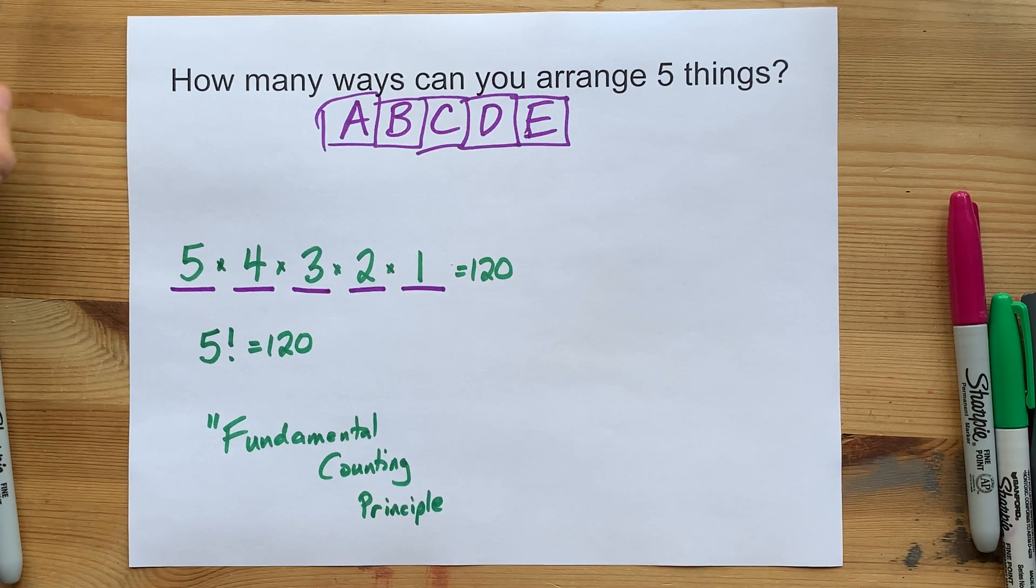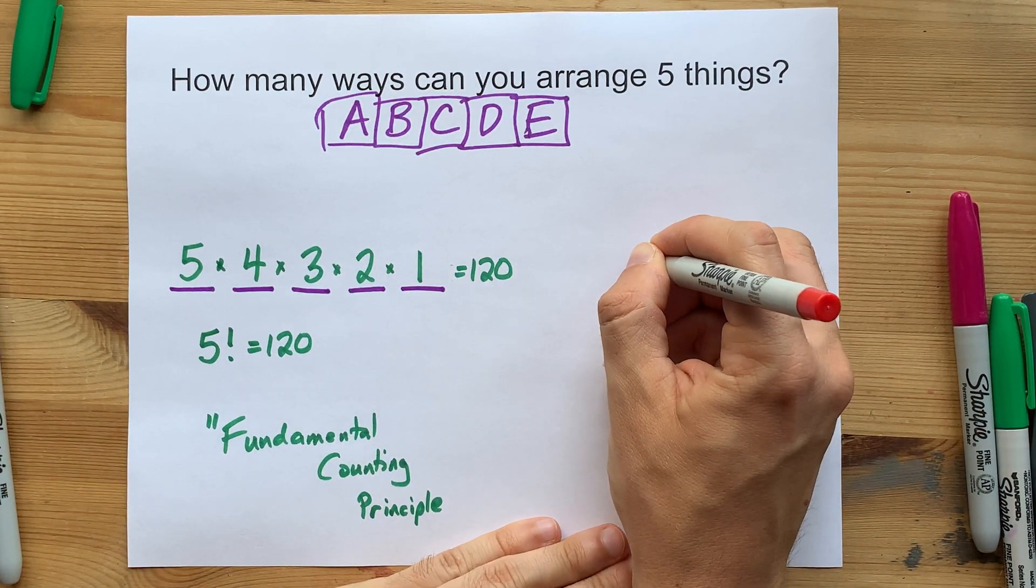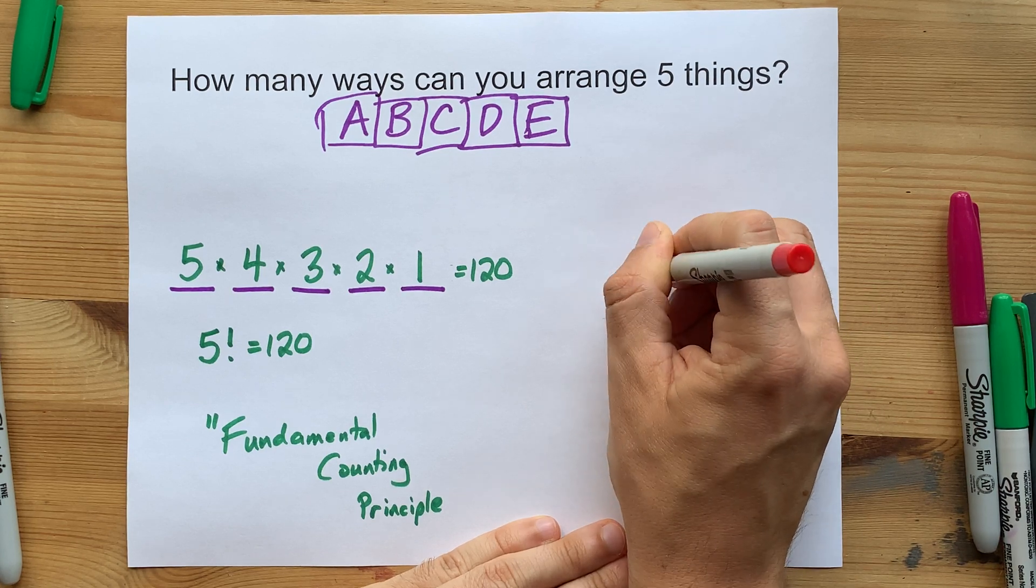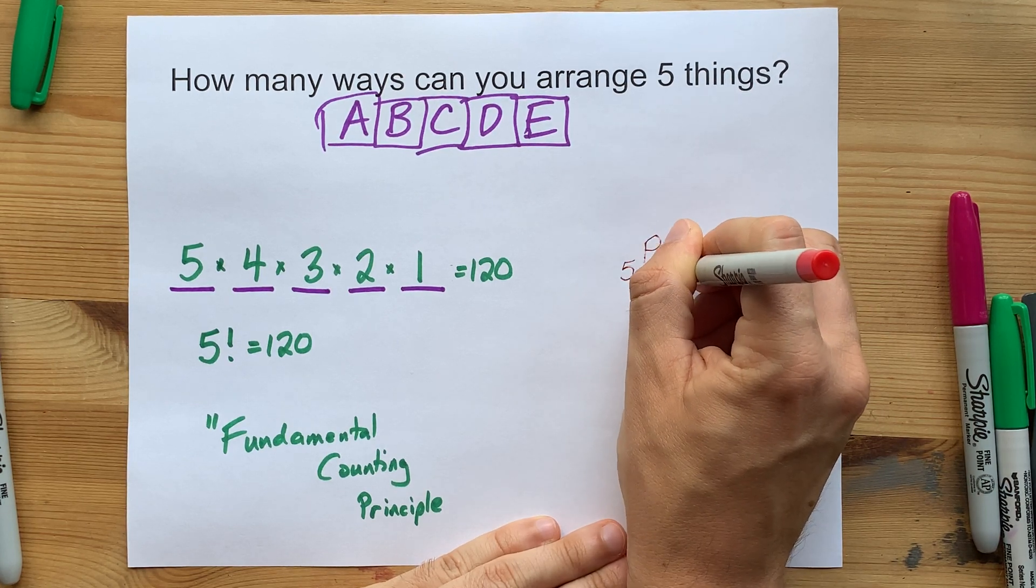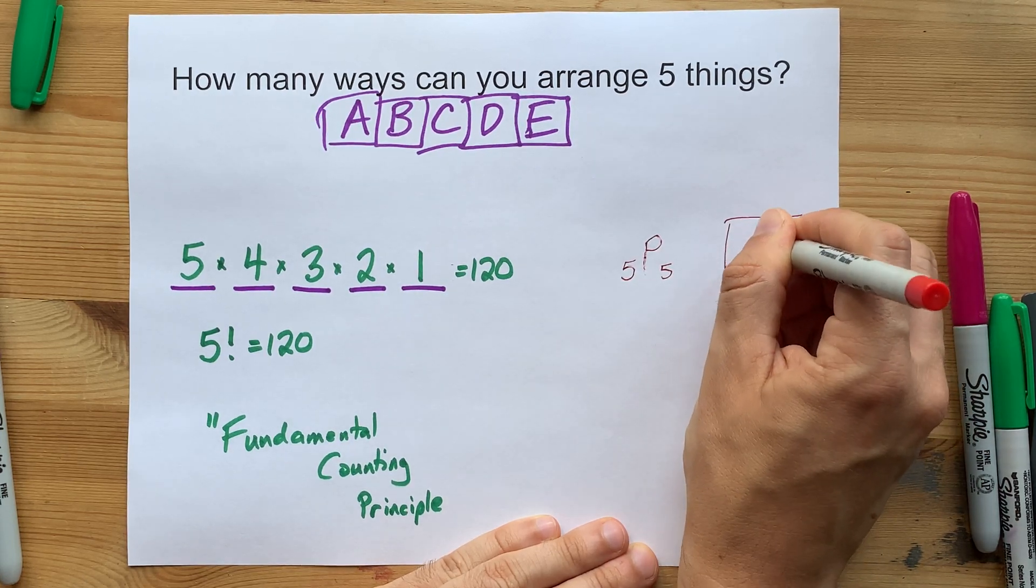There's one other way, though. So, if you're arranging five items and the order matters, we have something called a permutation. On your calculator, you're probably going to have to type 5P5, and you're going to use a button that is nPr.